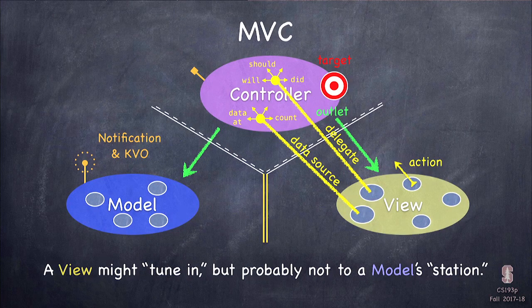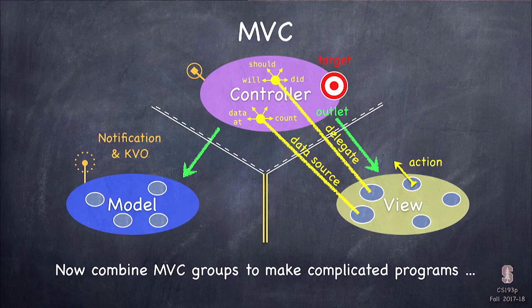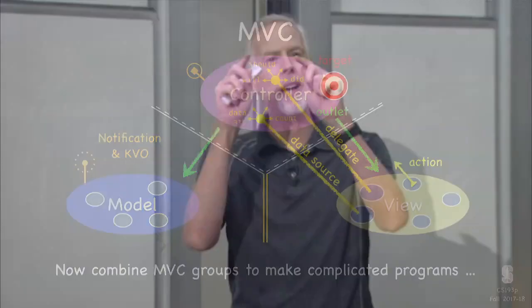A single MVC generally controls one screen. On iPhone or iPad, maybe one MVC controls one space, another MVC controls another. You'd never have more than one iPhone screen controlled by a single MVC. Most apps have tons of screens — settings, different features — so how do we build an app from multiple MVCs? When one MVC wants to interact with another, it always treats those other MVCs as part of its view.